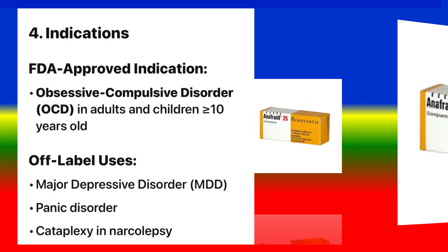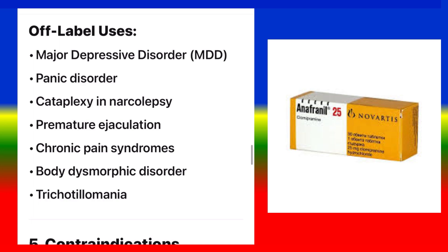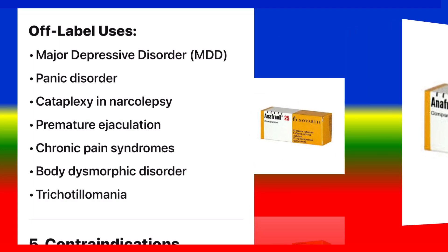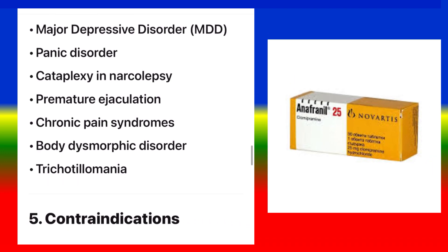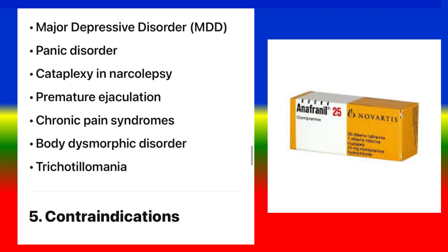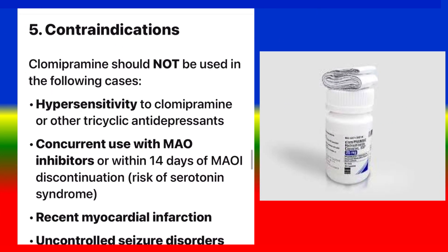Indications — FDA-approved: obsessive-compulsive disorder (OCD) in adults and children aged 10 years and older. Off-label uses include: major depressive disorder (MDD), panic disorder, cataplexy and narcolepsy, premature ejaculation, chronic pain syndromes, body dysmorphic disorder, and trichotillomania.